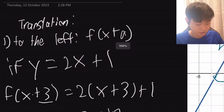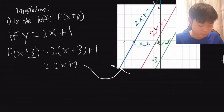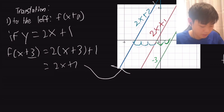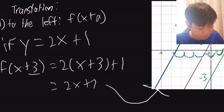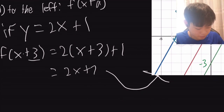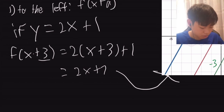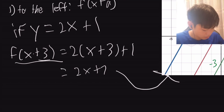I will be covering translation and reflection for linear equations, starting with translation to the left, which uses f(x+a). If y equals 2x plus 1, then substituting a=3 gives f(x+3) equals 2(x+3)+1, which is 2x+7.